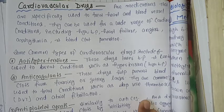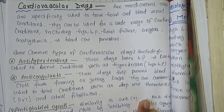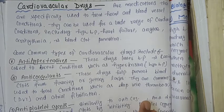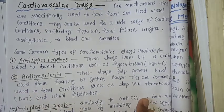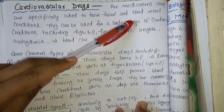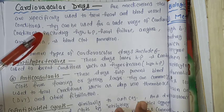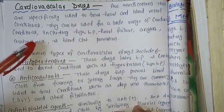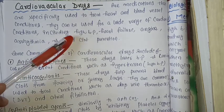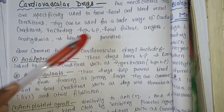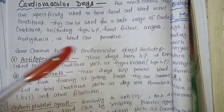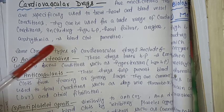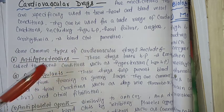Hello student, what do you understand from cardiovascular drugs? These are the medications that are specifically used to treat heart and blood vessel conditions. They can be used for a wide range of cardiovascular conditions including high BP, heart failure, angina, arrhythmia, and blood clot prevention.